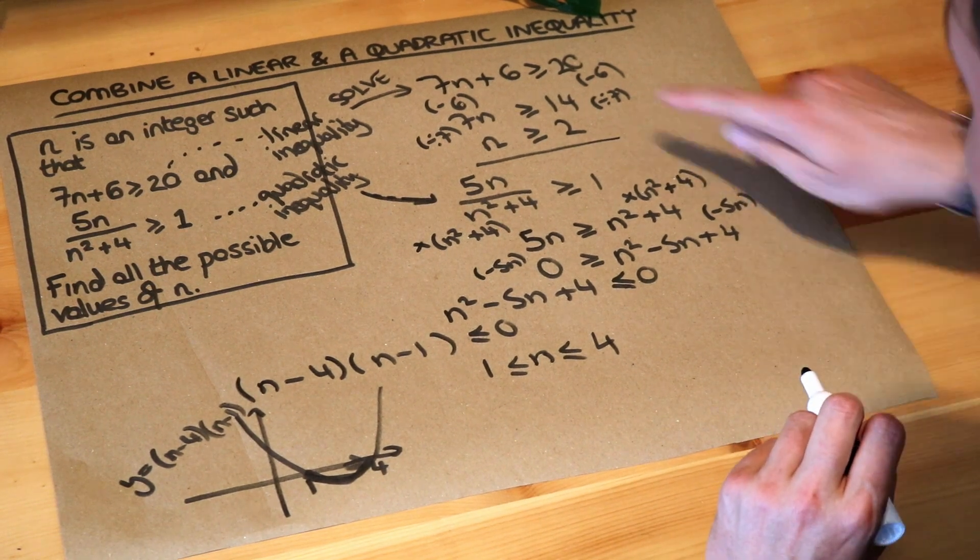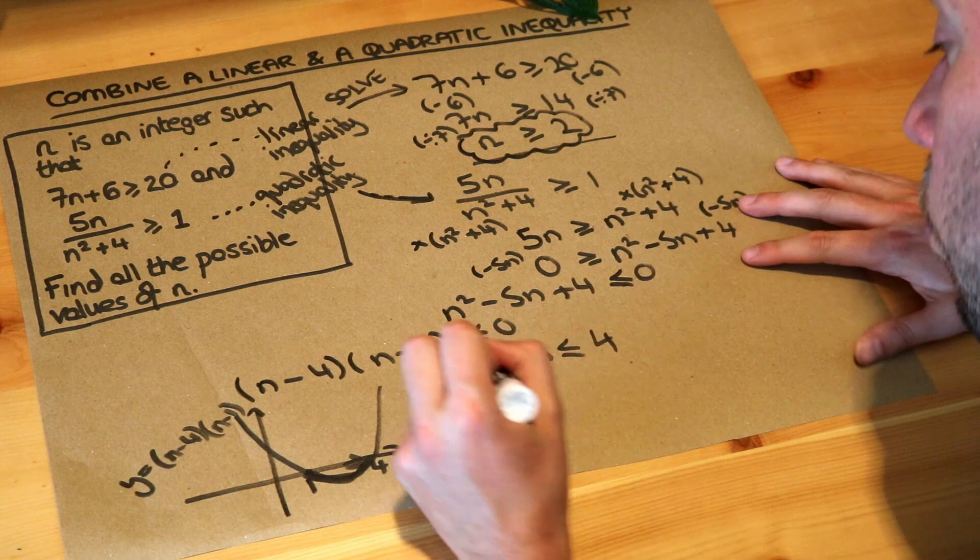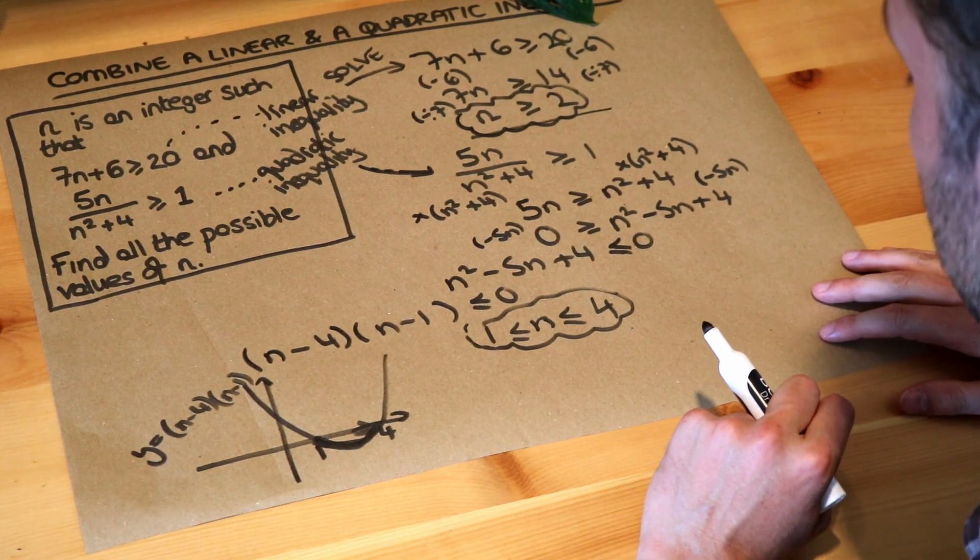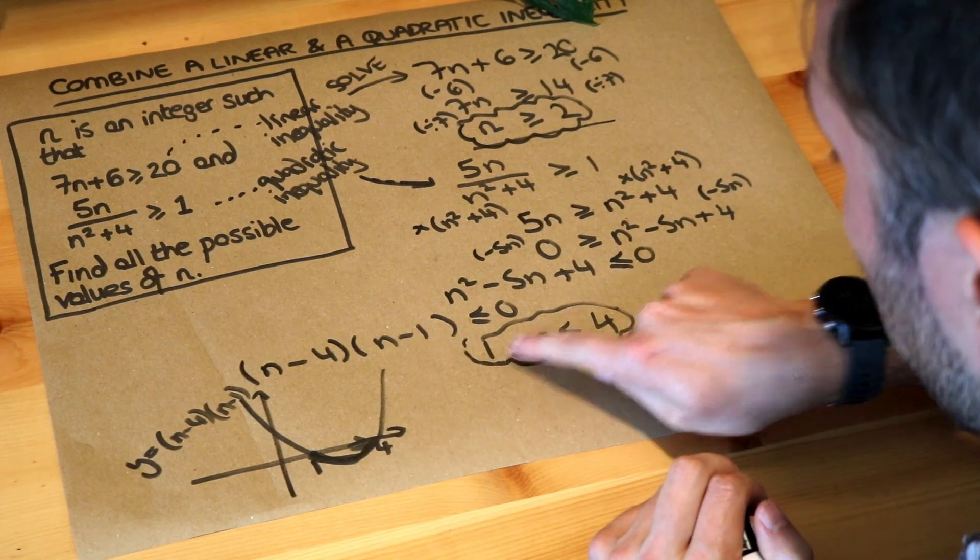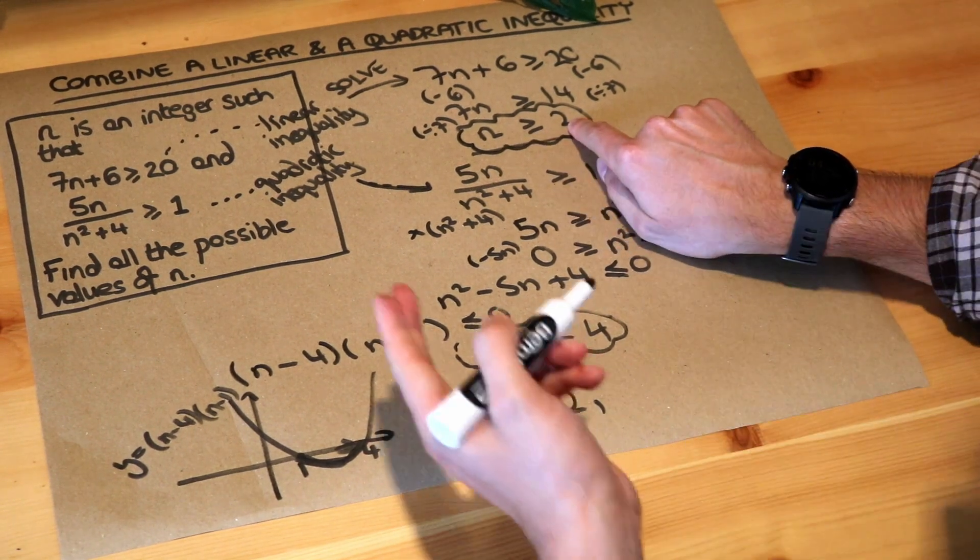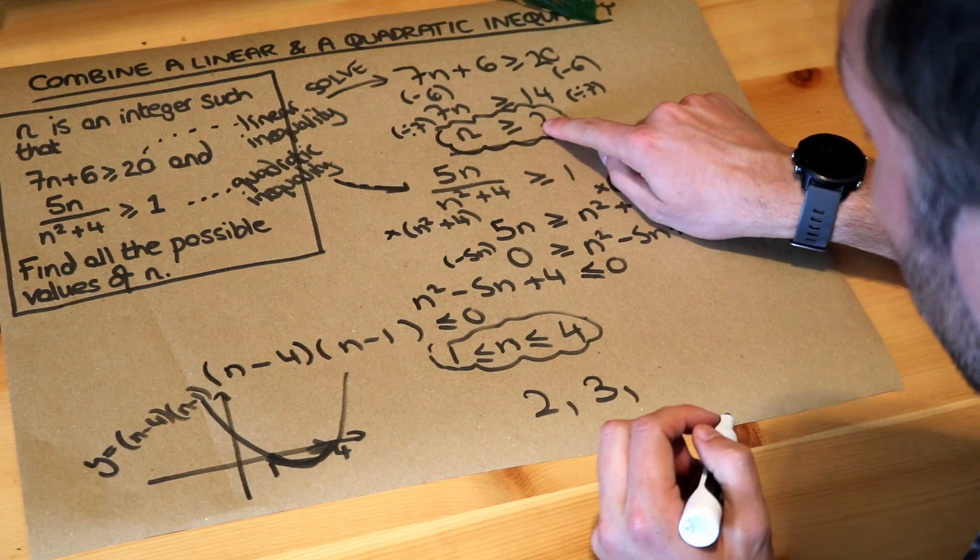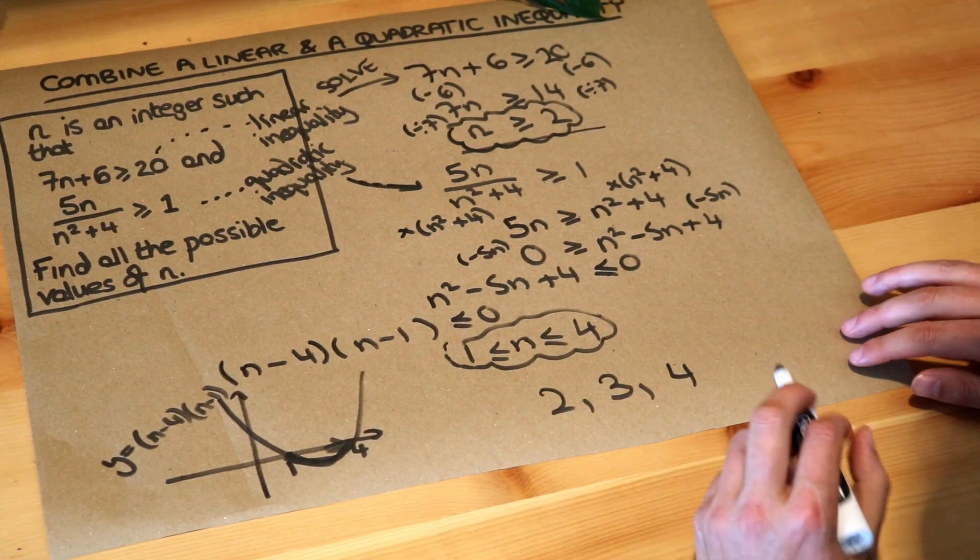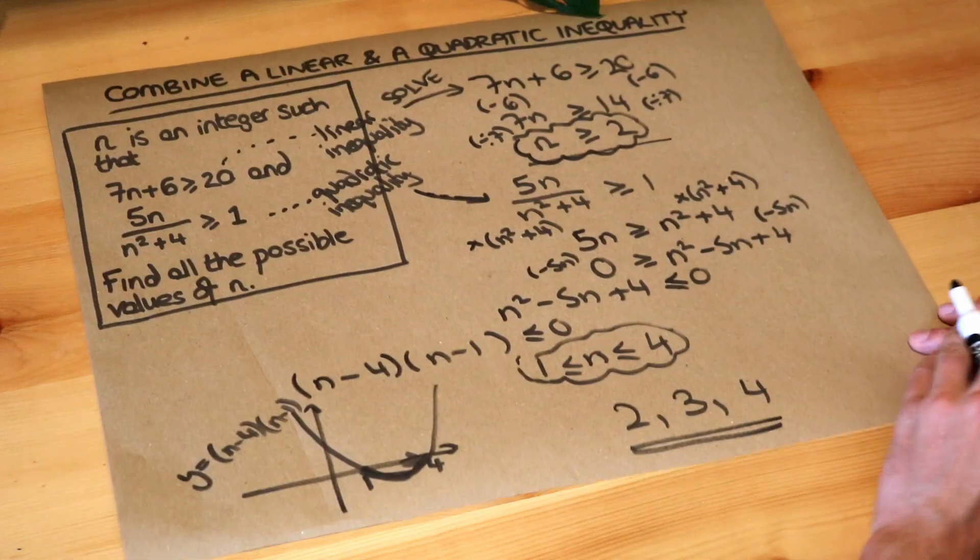And now we have to combine these two solutions together. We worked out that n is any number that's greater or equal to 2. But n is also between 1 and 4, and we're told it's an integer. So let's use our common sense. N is any number greater or equal to 2. So let's start with 2. 2 is greater or equal to 2. Is 2 between 1 and 4? Yes, it is. So we've got 2. Let's consider the next number. 3 is greater or equal to 2. Is 3 between 1 and 4? Yes, it is. And finally, what about 4? 4 is greater or equal to 2. Is it between 1 and 4, including 4? Yes, it is. And then we can see that's going to be the end of our solutions. 5 is greater or equal to 2, but 5 is not between 1 and 4. So those are the final solutions.